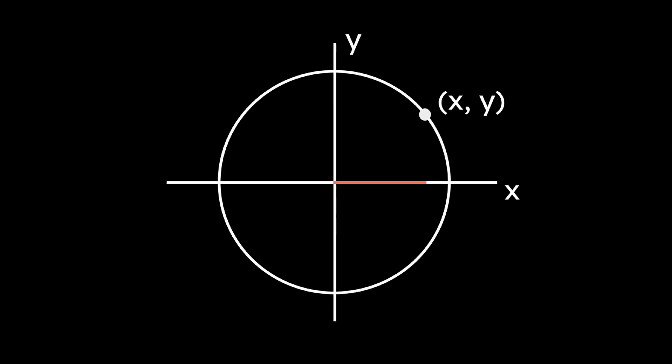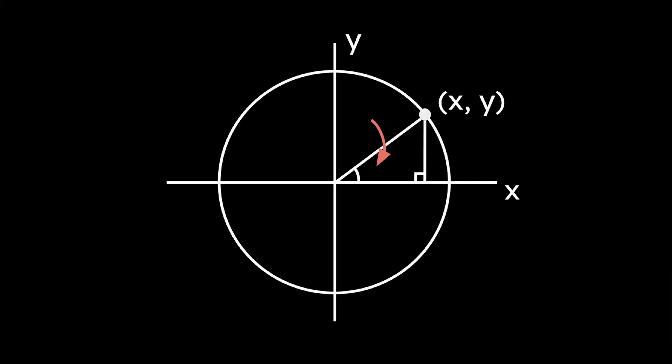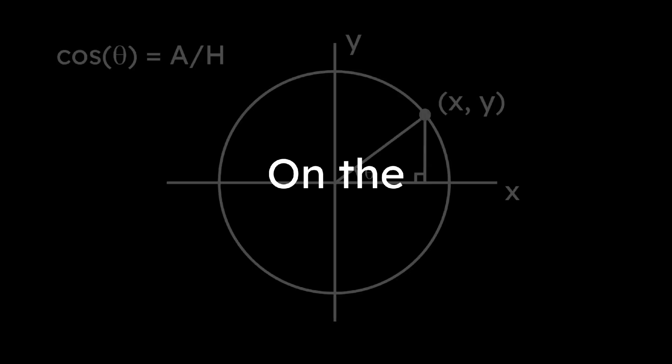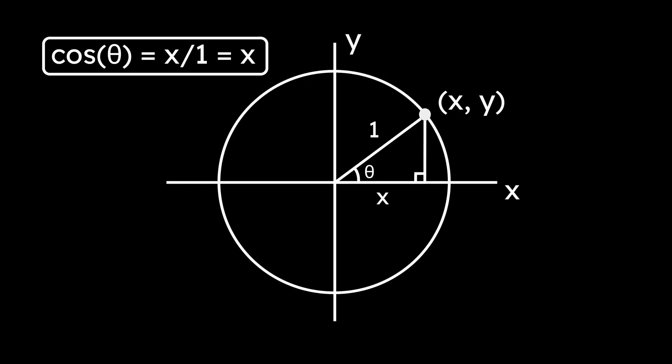To see why this is, let's pick a random point. Now if we draw these lines, we form a triangle. Wait a minute, that's the same triangle we saw before! If this angle is theta, then cosine of theta is adjacent over hypotenuse. On the unit circle, the hypotenuse is 1, and the adjacent side is just the x-coordinate of the point. So cosine of theta equals the x value. By the same reasoning, sine theta equals the y value.